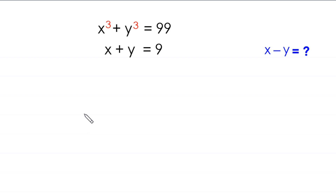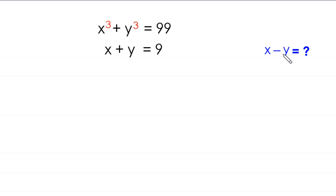Hello everyone, welcome to how to solve this very nice system of equations. x cubed plus y cubed is equal to 99, and x plus y is equal to 9. Our job is to find all possible values of x minus y. Let's call the first equation number one and the second equation number two.